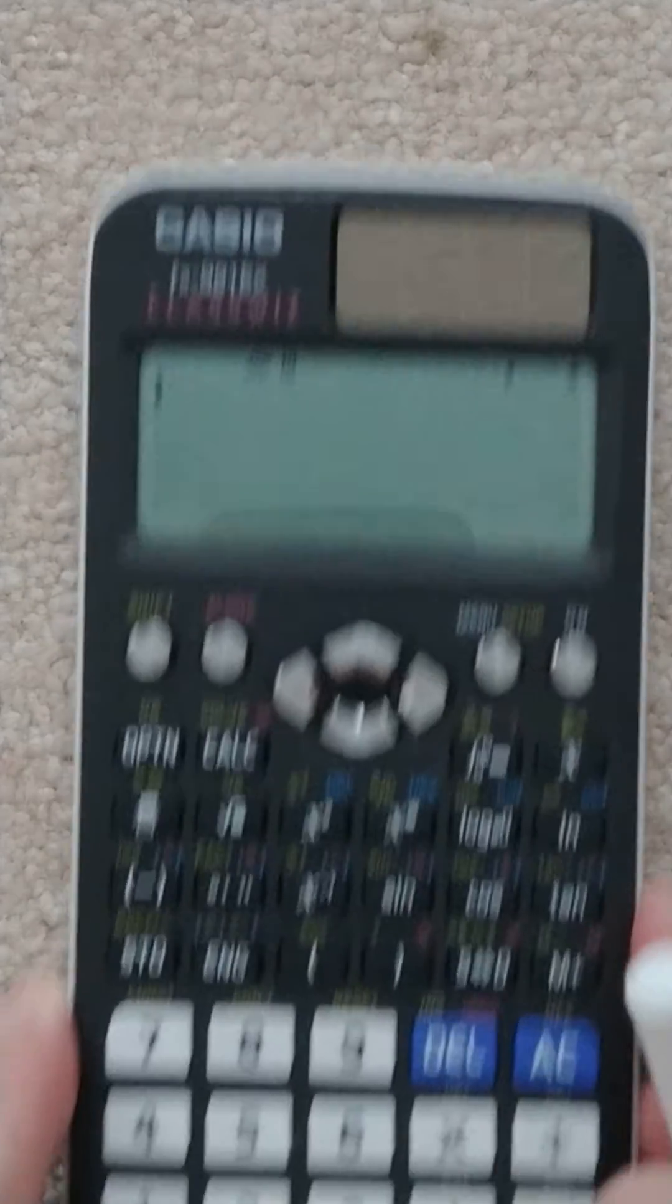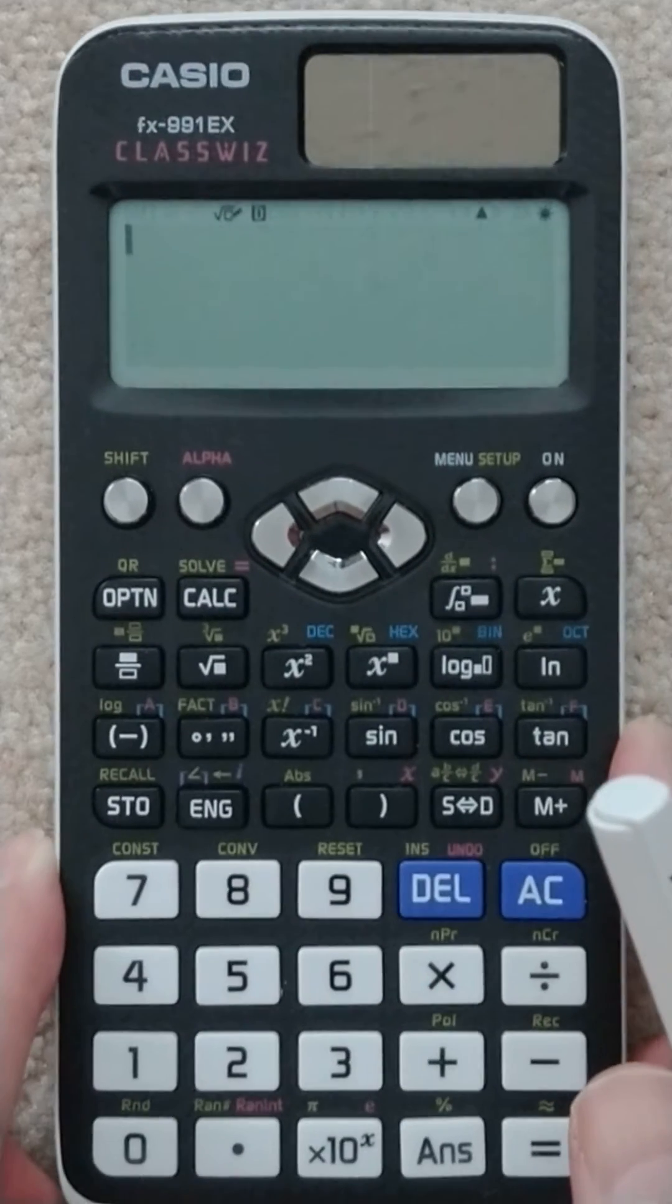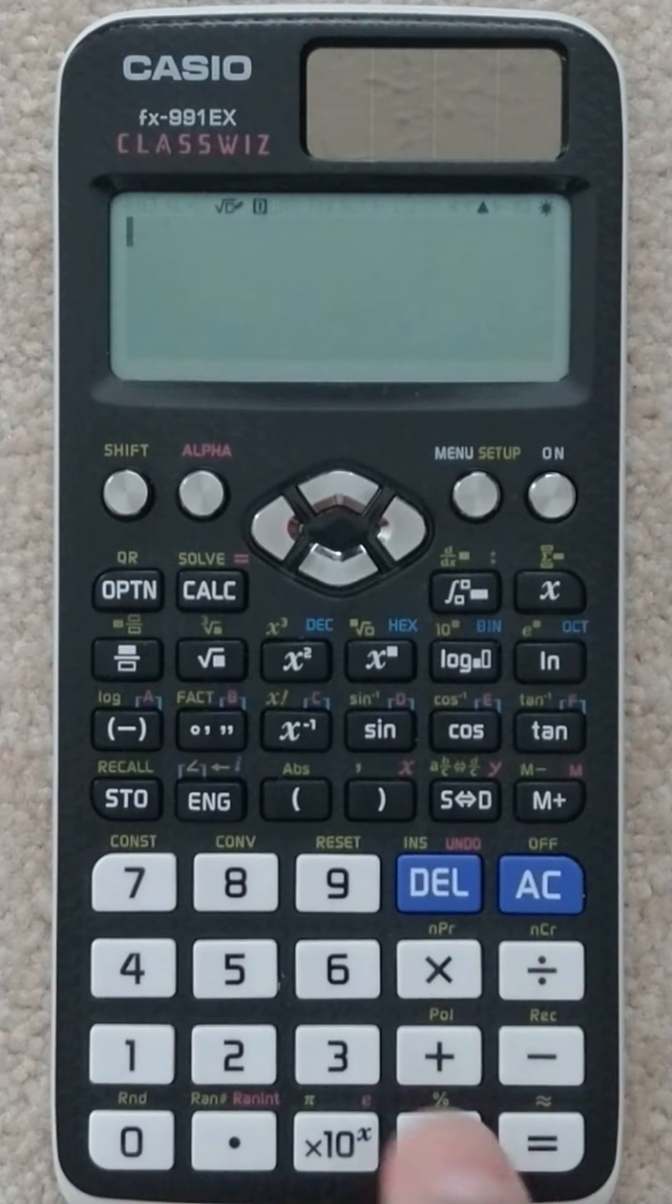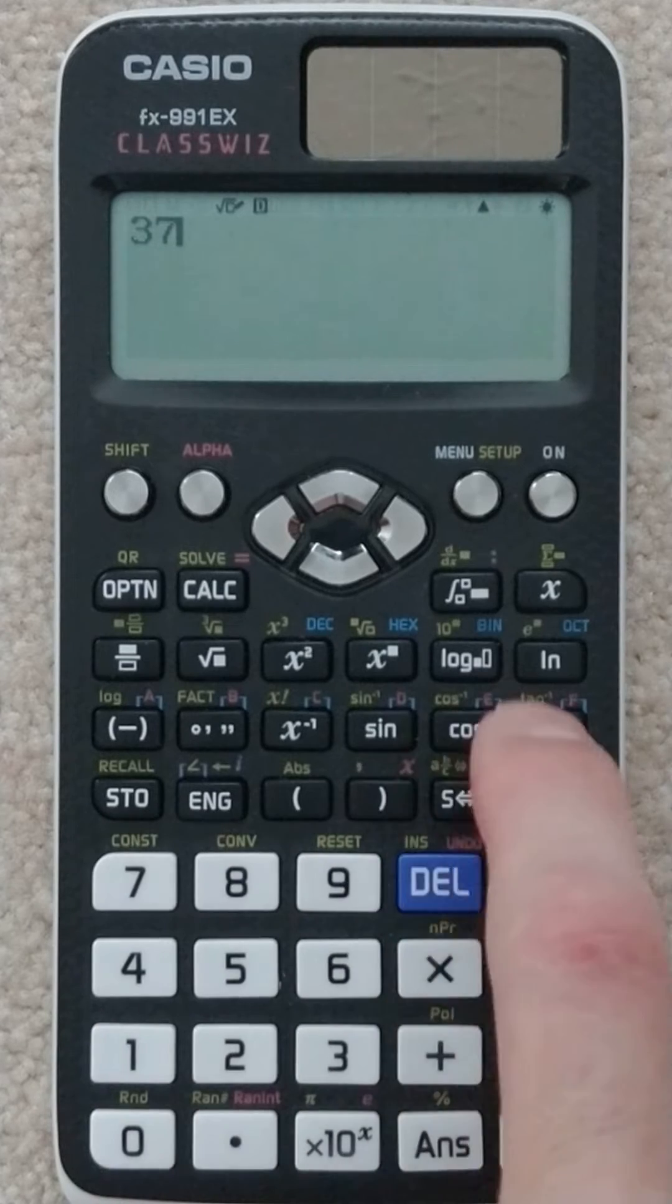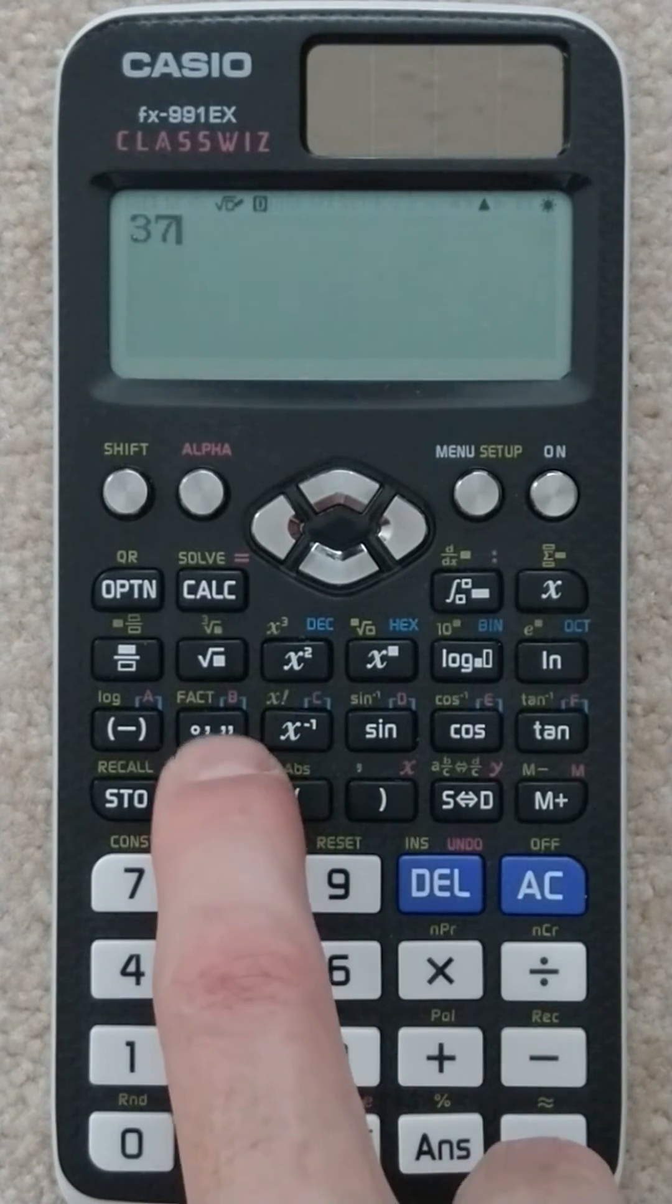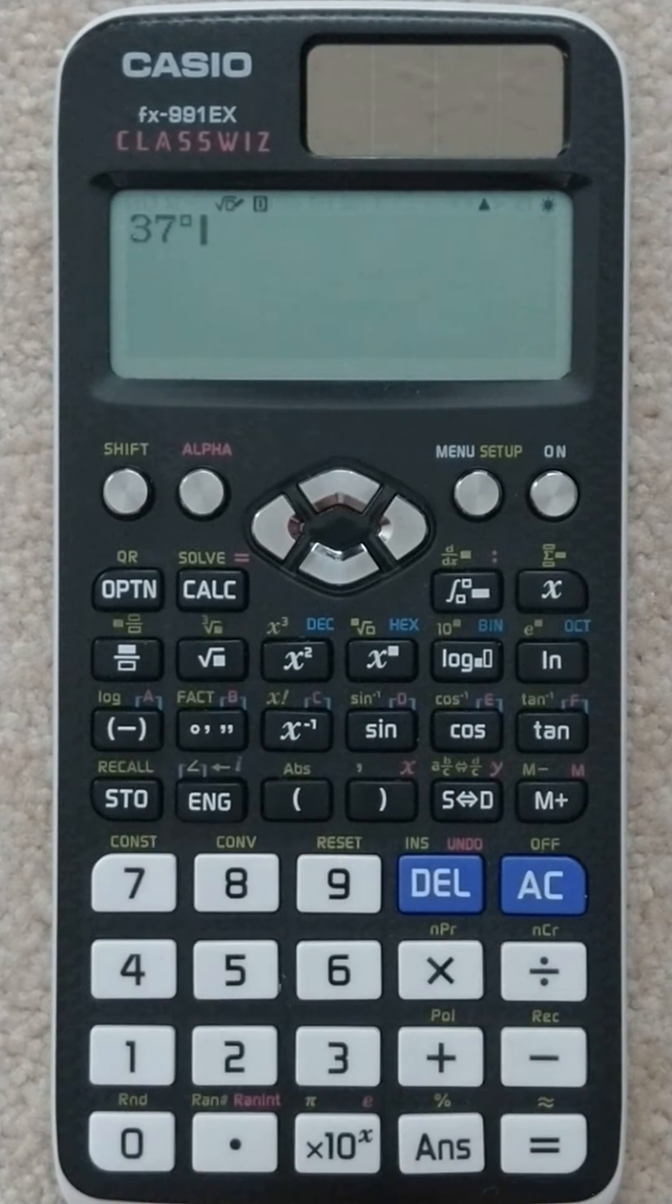So what I'm going to do is use a Casio, and we're going to type in what we were given, 37 degrees. The degrees button right here, hit this button, shows up as a degree symbol.